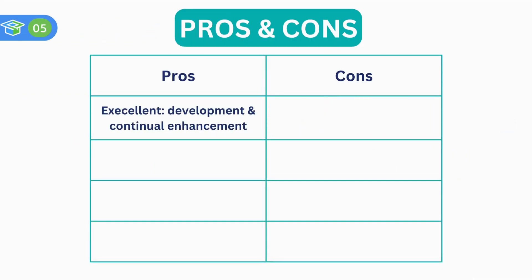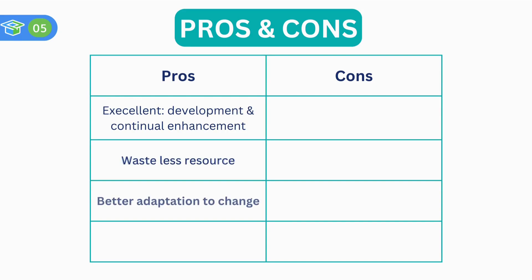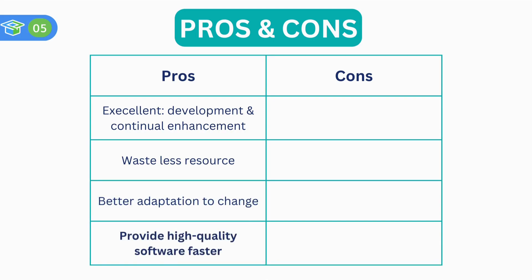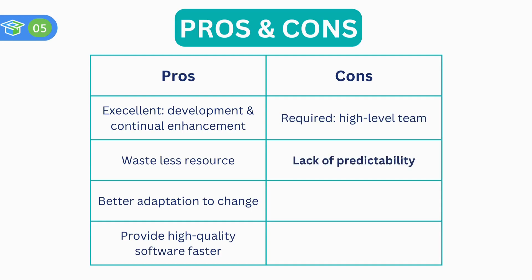Agile development is excellent for continual enhancement of a system within the established architecture. The development team wastes less resources since the work is always up-to-date and better adapts to any change. Furthermore, agile development provides high-quality software solutions faster. However, agile development still has minor disadvantages such as high-level teams must establish overall architecture and coordinate the sprints, and applying this methodology may lack predictability since agile depends heavily on flexibility and adaptability.